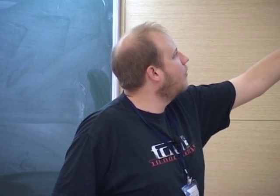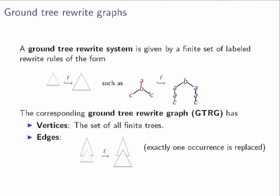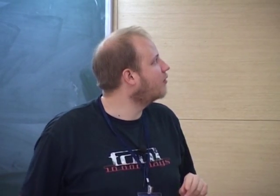When can you go from one tree to another? You take a large tree, find a subtree that matches the left-hand side of some rule, apply this rule, and replace this subtree by the right-hand side of the rule — exactly once, not for all occurrences of the subtree.